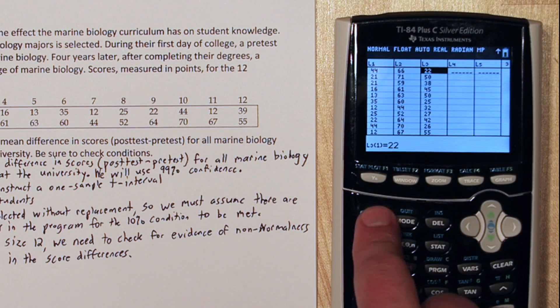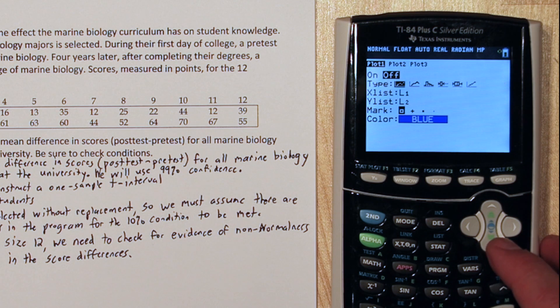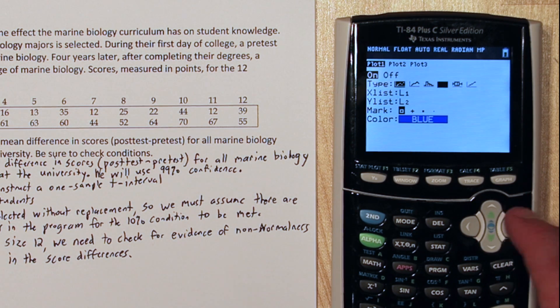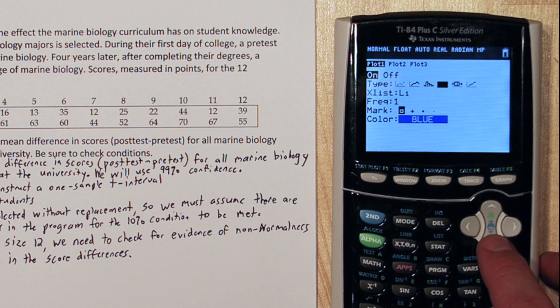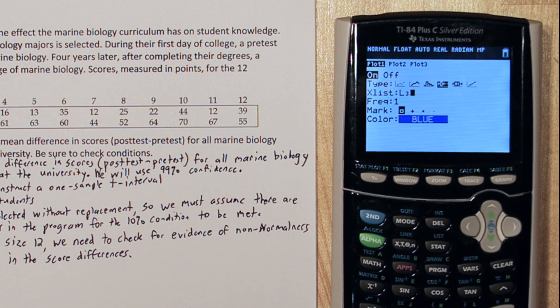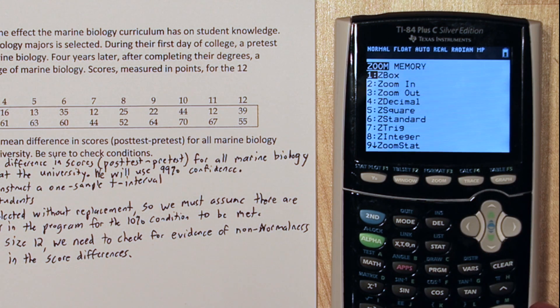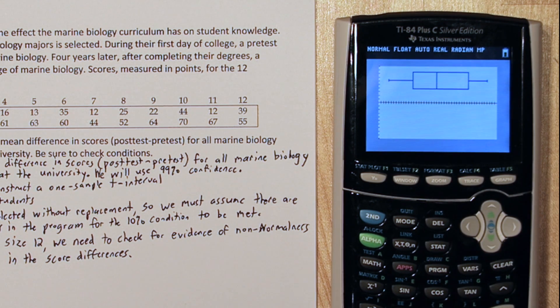We can do this by pressing 2nd to get to the statplot menu. Press enter on plot 1, turn it on, and go over to the fourth option, the modified boxplot. We want to use list 3, which is the differences. So press 2nd and 3. Now when we press zoom 9, it will graph it. Alright, I don't see any little points there or symbols, so there's no outliers. That's good news.